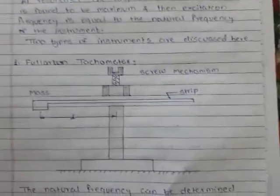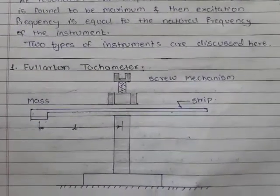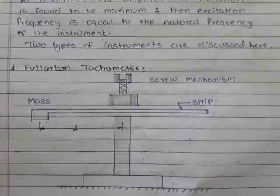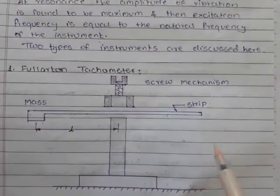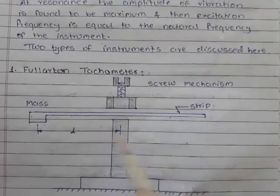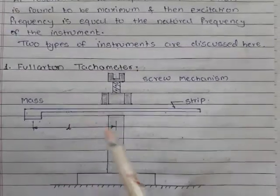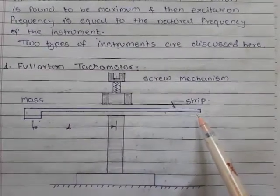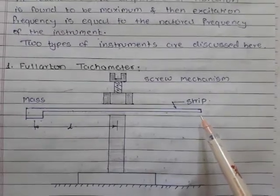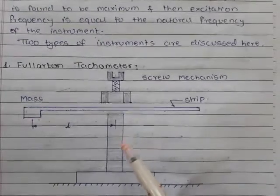First is Fullerton tachometer. This instrument is known as a single-reed instrument because it consists of only one strip. It consists of a thin strip carrying a small mass on its free end. The strip is treated as a cantilever beam, the length of which is changed by means of the screw mechanism as shown in the figure.